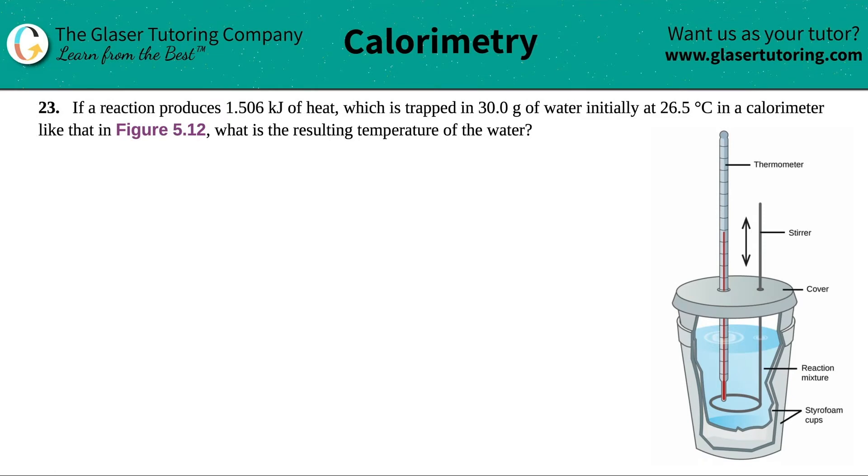Number 23. If a reaction produces 1.506 kilojoules of heat, which is trapped in 30.0 grams of water initially at 26.5 degrees Celsius in a calorimeter like that in figure 5.12, what is the resulting temperature of the water?